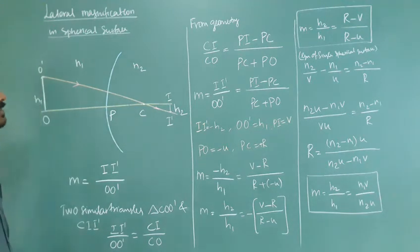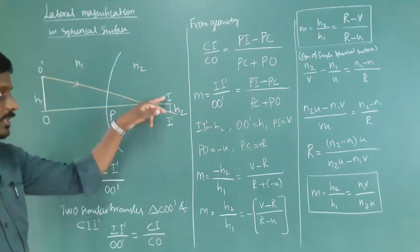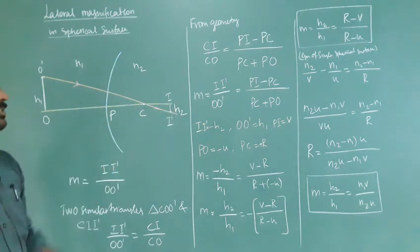Now for the sign convention. II' is the height of the image. It is downward, so negative axis, minus h₂. O' is positive axis, plus h₁.